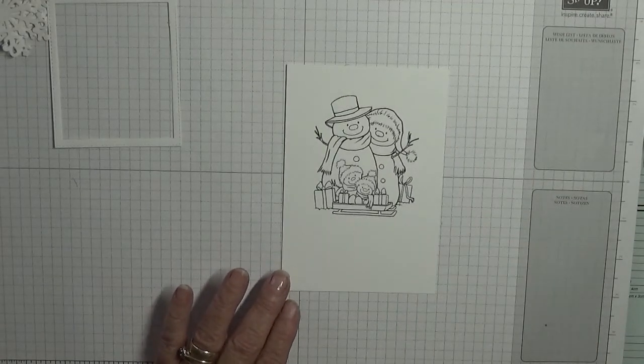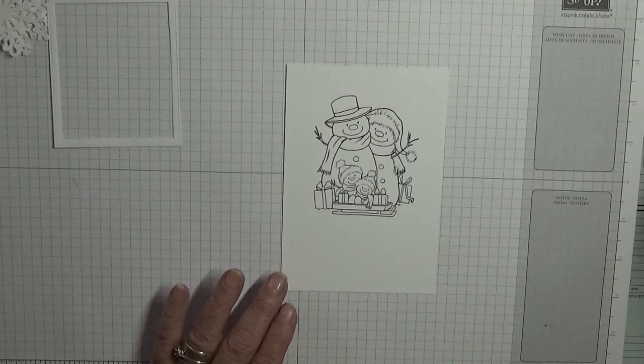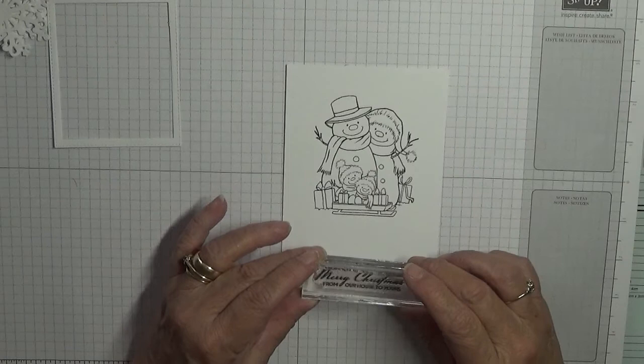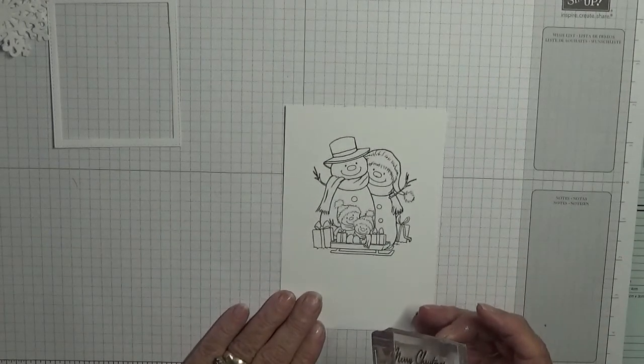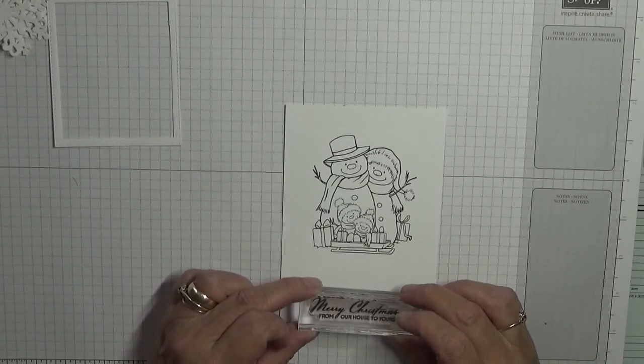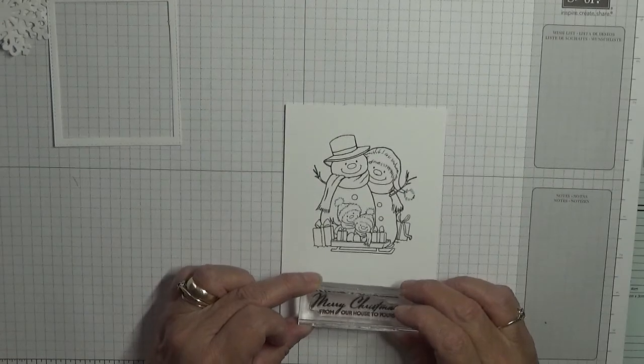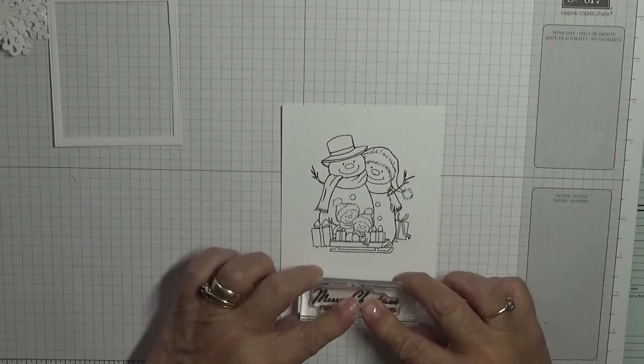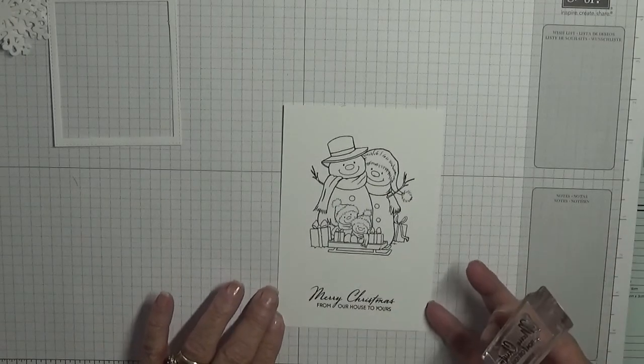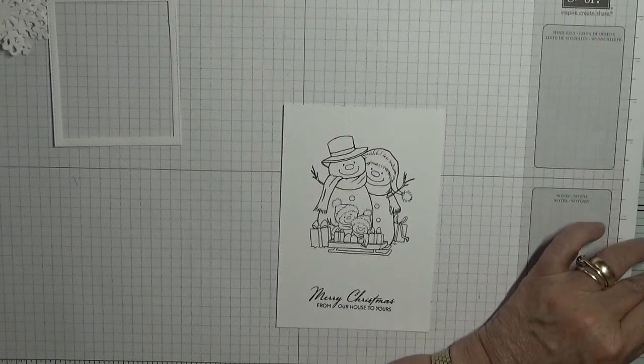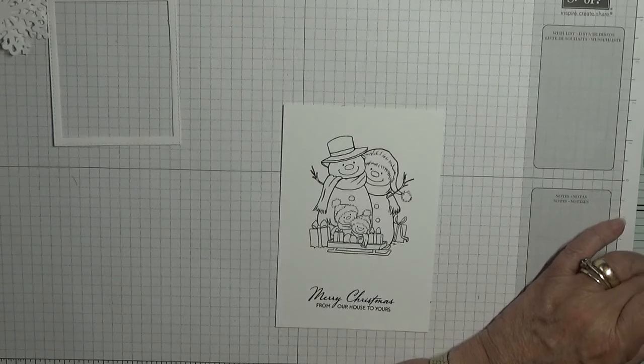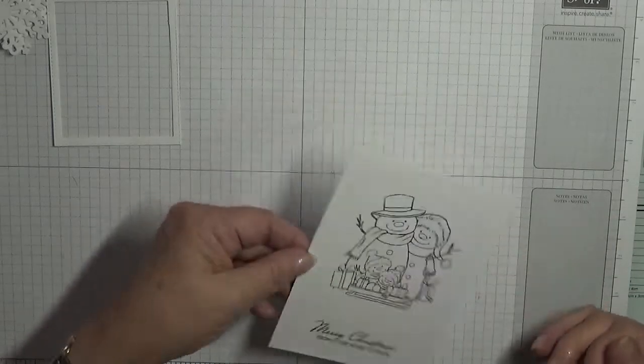And now we want the sentiment. We're going to put it down at the bottom. Let's stamp that there. I've got a funny feeling that's not straight because the card moved. Well, that's not too bad. Clean it off and stick that to the side to dry.